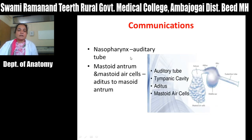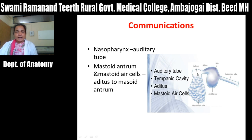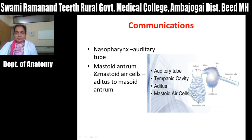The tympanic cavity is connected anteriorly with the nasopharynx through the Eustachian tube or auditory tube, and posteriorly it is connected to the mastoid antrum through the aditus to the mastoid antrum. These are the communications of the middle ear cavity. Anteriorly through the Eustachian tube it is connected with the nasopharynx, and posteriorly through the mastoid antrum and mastoid air cells through the aditus to the mastoid antrum.